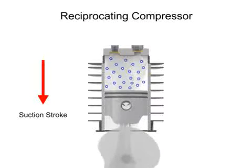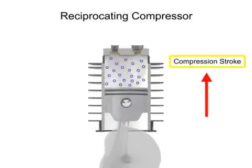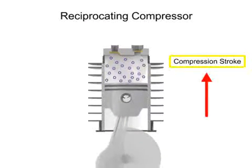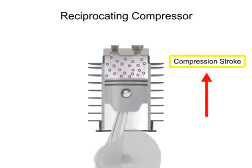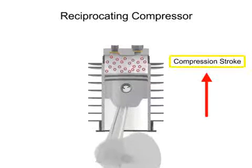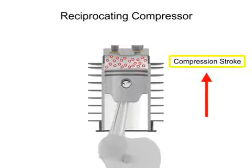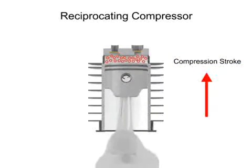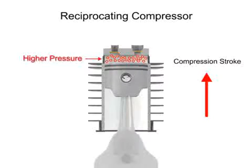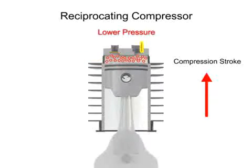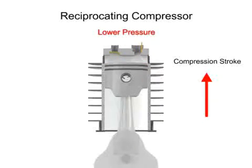The upward stroke is called the compression stroke. As the piston begins its upward compression stroke, the volume within the cylinder decreases. The decrease in volume causes the pressure within the cylinder to increase, which opens the outlet valve and compressed air discharges from the cylinder.